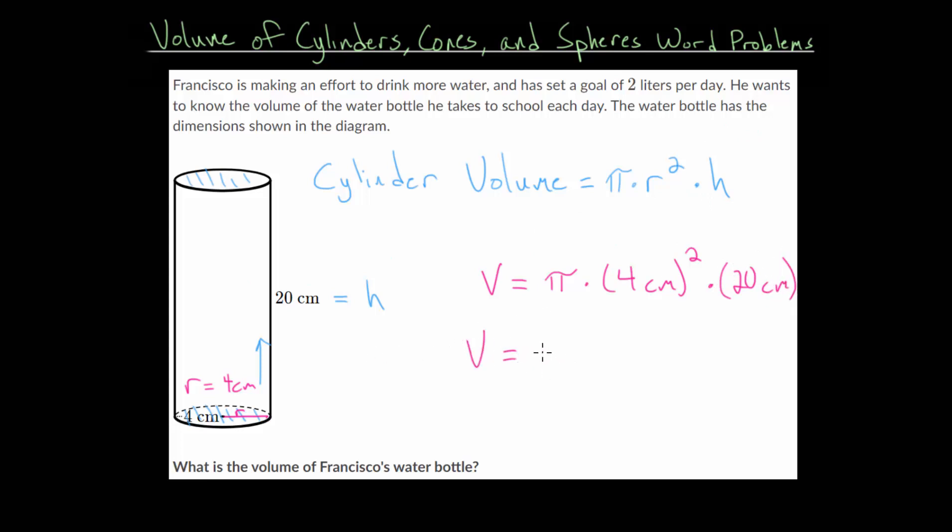Simplifying, we will have pi multiplied by 16 square centimeters. Notice with the units, we are multiplying centimeters by centimeters, which gives us square centimeters. We multiply all that by 20 centimeters. Now 16 times 20 would be 320.